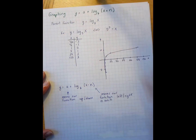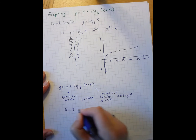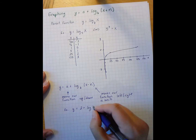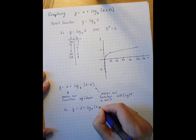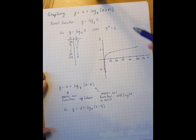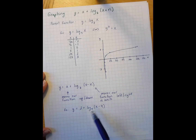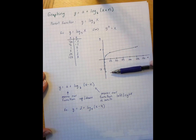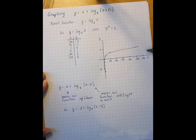Let's look at the same function from our first example and change it slightly to y equals 2 plus log base 5 of x minus 4. I know where the parent function log base 5 of x sits. The 2 moves this whole function up 2 units, and the 4 moves everything over 4 units to the right.